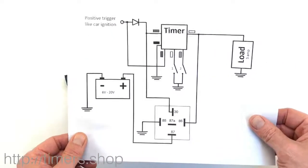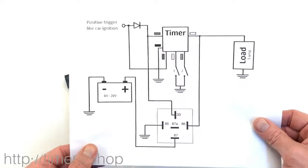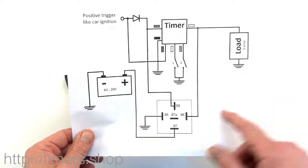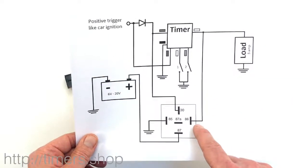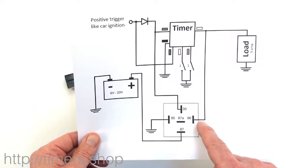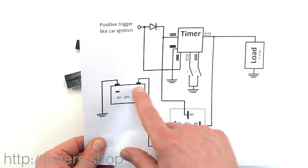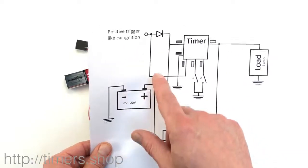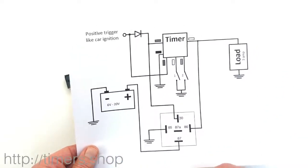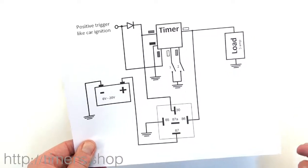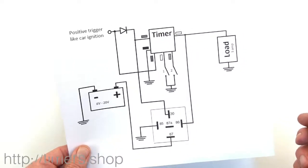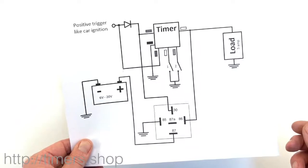Now if you remove the relay and supply the power continuously to the timer, then you don't need the diode and can use the trigger wire. In this case you get the same functionality but the timer is going to consume about four milliamps.